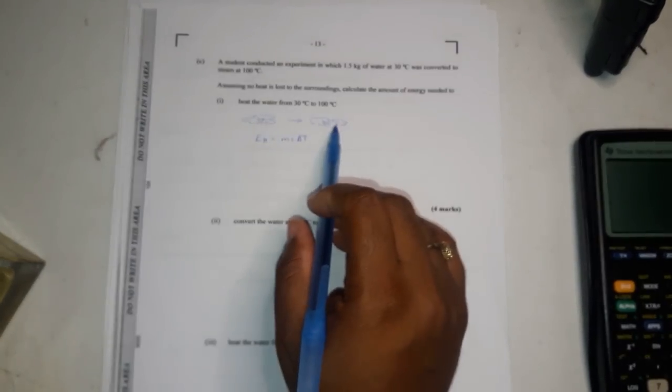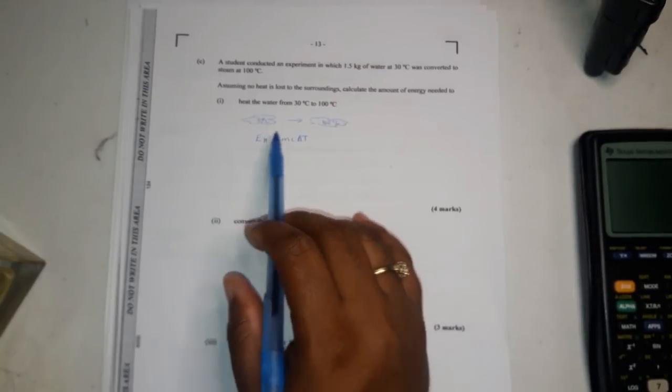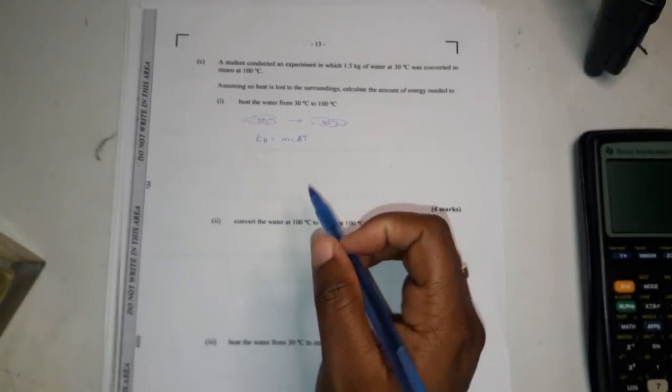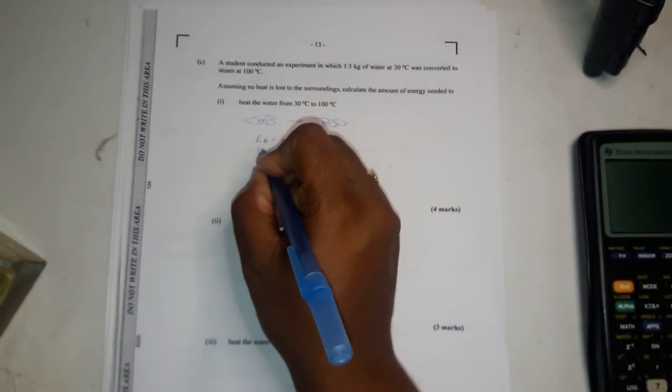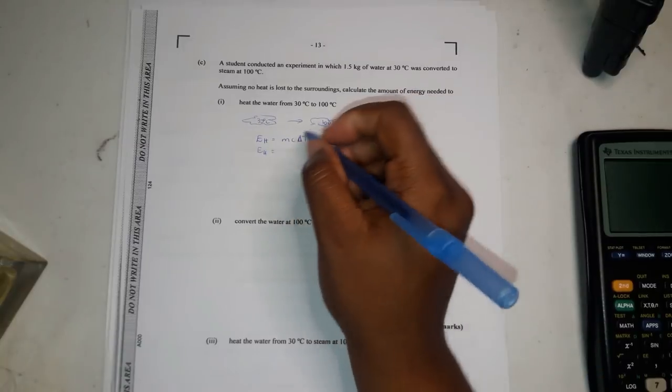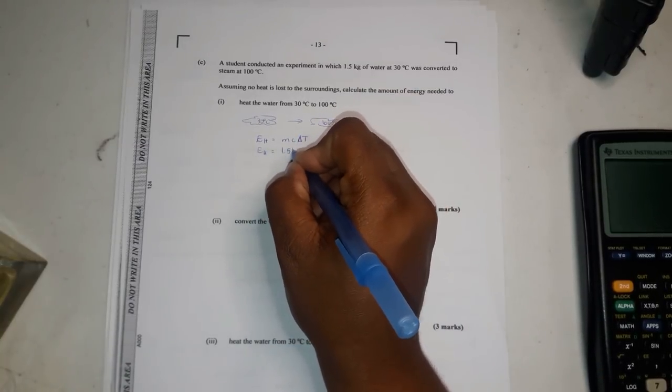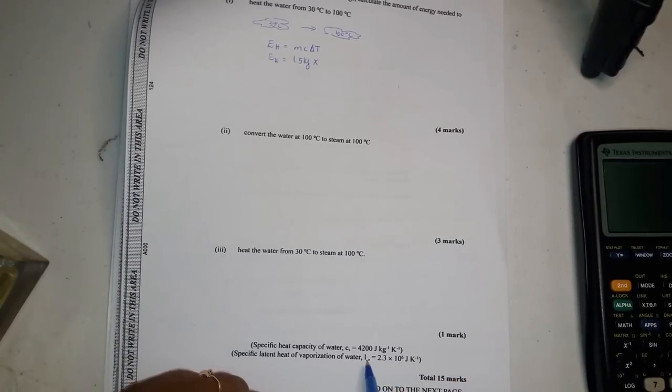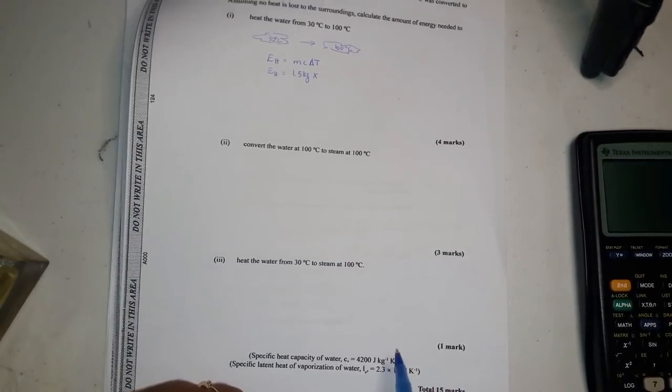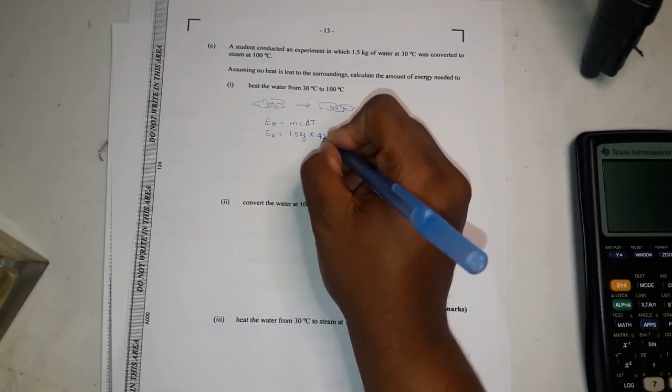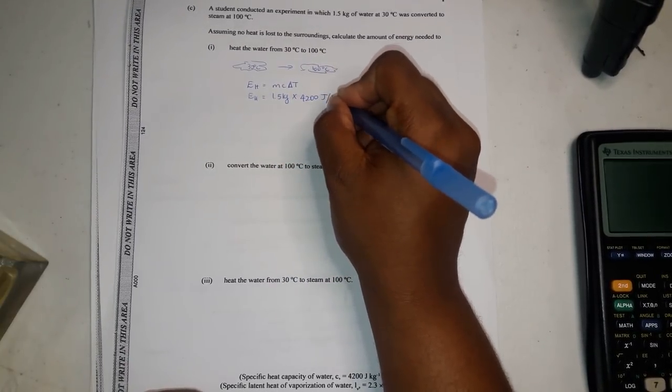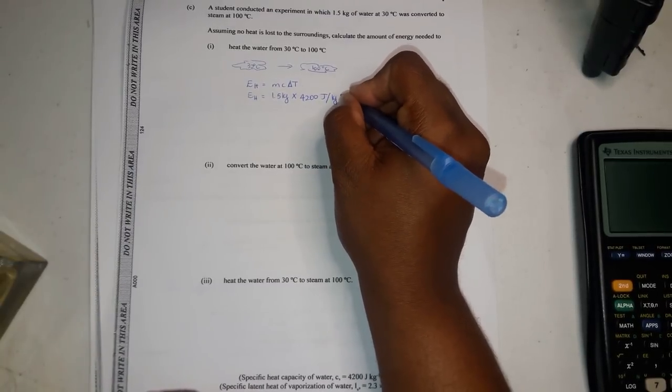So going from 30 to 100, you realize there's a temperature change. So once there's a temperature change, you use this equation, which is mcΔT. And you say EH equal to what's the mass? 1.5 kilograms times what they give you down here. They give you the specific heat capacity of water, which is c, 4200 joules per kilogram. It would be Celsius.